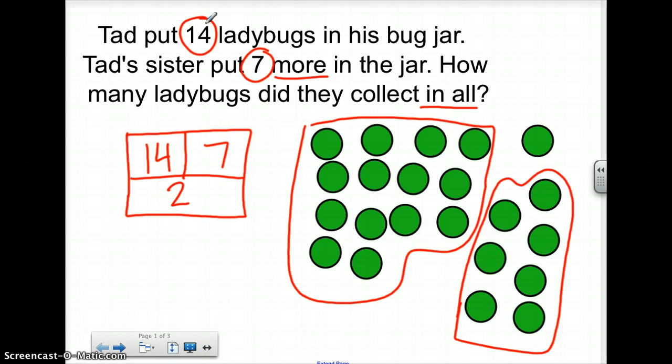So my whole is twenty-one and at the end I need to see a number sentence. My first number was fourteen plus seven and my total was twenty-one.